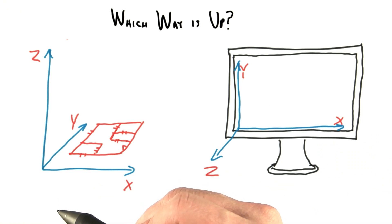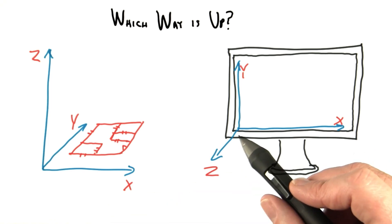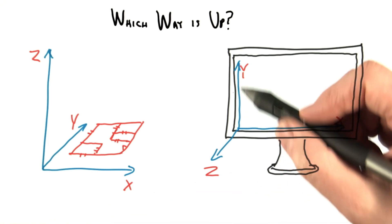However, another common way to think about the coordinate system is with respect to our display. Looking at a monitor and starting in the lower left-hand corner, the x-axis goes to the right, the y-axis goes up.